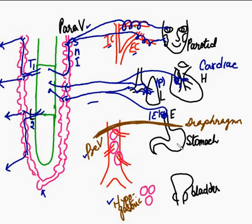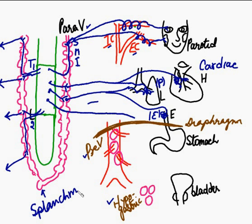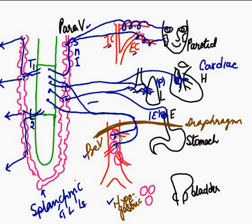For organs in the abdominal and pelvic area, the fibers begin and come into the ganglia but pass through without synapsing — these are still preganglionic fibers known as the splanchnic nerves: the greater, lesser, and least splanchnic nerve. They travel out, pierce the diaphragm, and come to synapse in the prevertebral ganglia. From there, postganglionic fibers travel with blood vessels to supply the organs, such as the stomach.